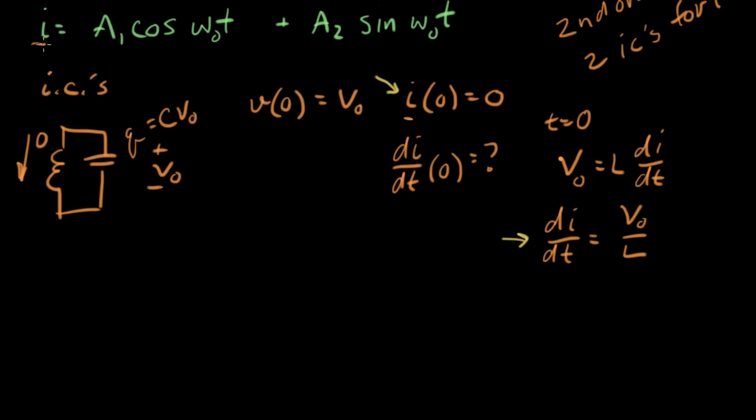First, let's plug in I for time equals zero. That means at time equals zero, the current is zero, and that equals A1 cosine omega-naught times zero plus A2 times sine of omega-naught times zero. This is sine of zero and sine of zero is zero. So that comes up with zero equals A1.